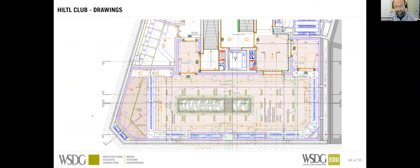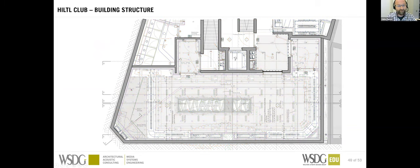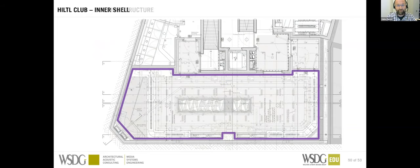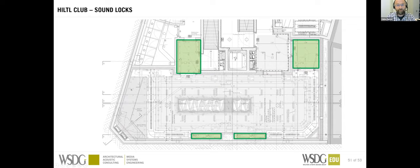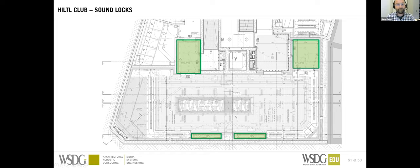Here's the floor plan of the underground club. We see the basic building structure and then the inner shell we introduced with isolation and gypsum. We also introduced two sound locks with two doors each — one on the inside, one on the outside — for access and emergency exit. The HVAC system comes from one floor below the club and gets distributed inside. We also had to ensure this did not create a sound leak into the rest of the building.